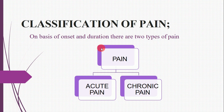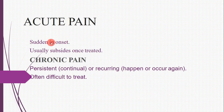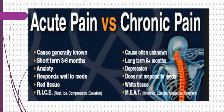Pain can be classified into two categories on the basis of onset and duration. Acute pain has a sudden onset and usually subsides once treated, generally lasting three to six months. It responds well to medications such as RICE (rest, ice, compression, elevation). Chronic pain is persistent, continual, or recurring and is often difficult to treat.